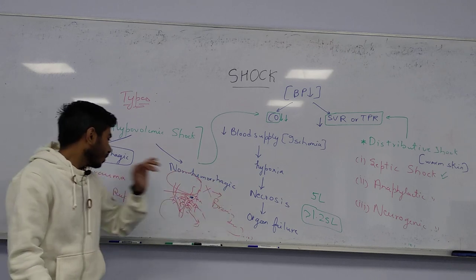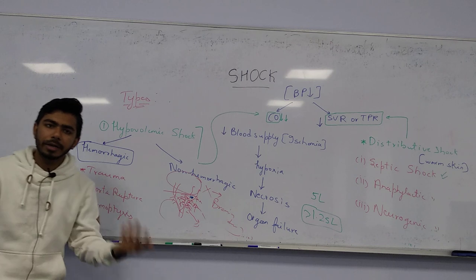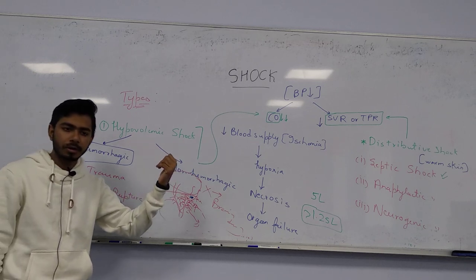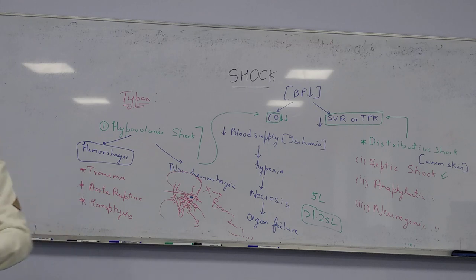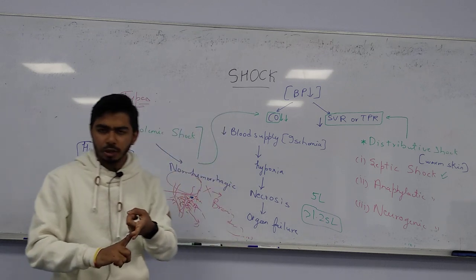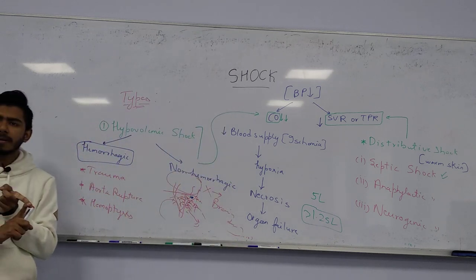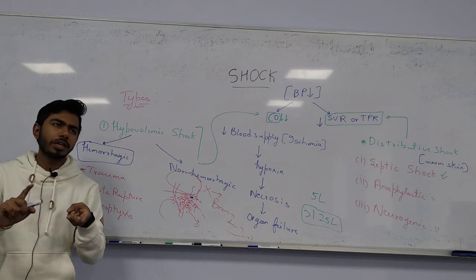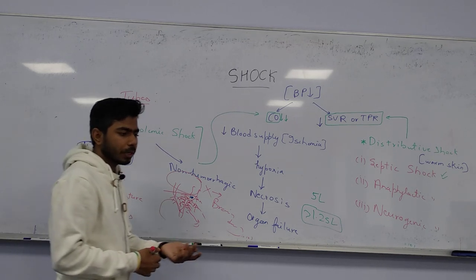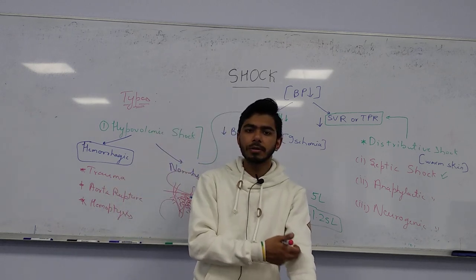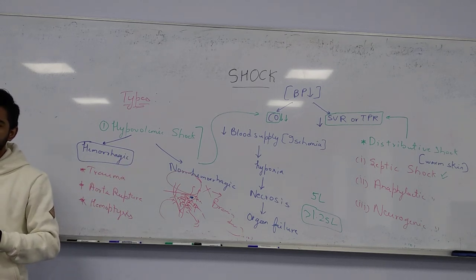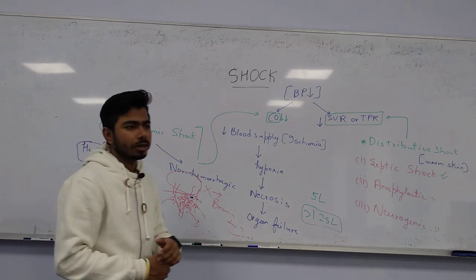Non-hemorrhagic causes of hypovolemic shock involve loss of body fluid rather than direct blood loss. For example, diarrhea causes loss of fluid and bases, leading to dehydration. In severe diarrhea or vomiting, IV fluids are needed to prevent shock. IV fluids (e.g., Ringer's lactate or normal saline) replace lost volume.